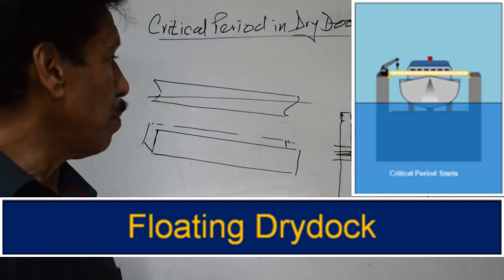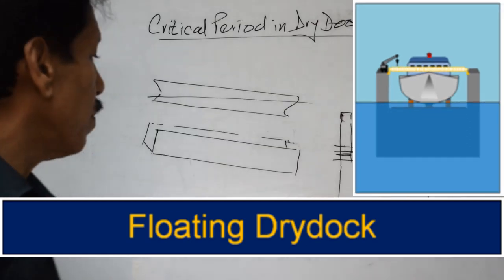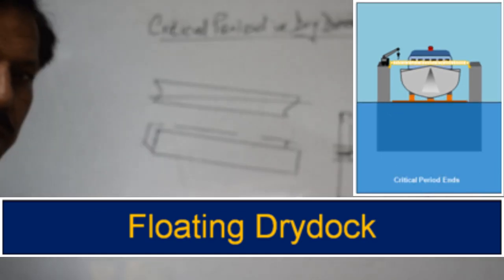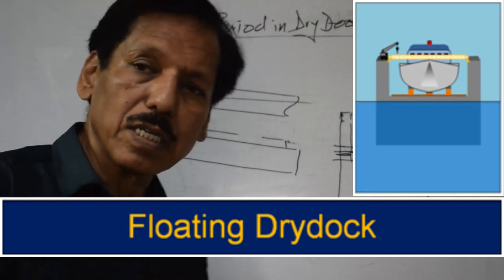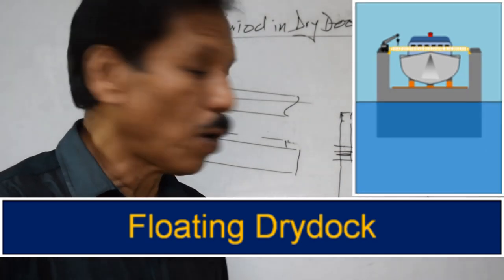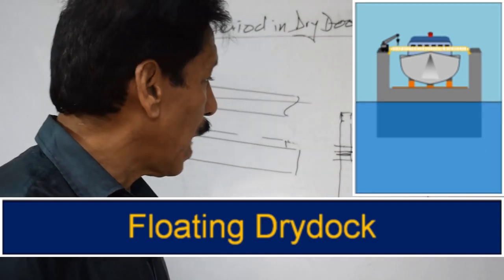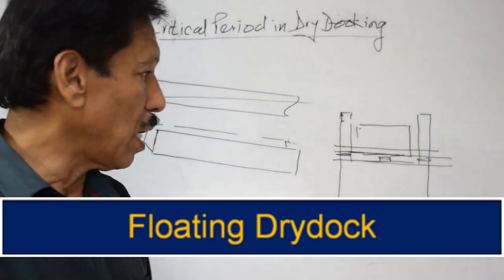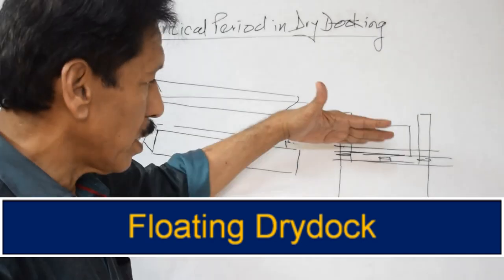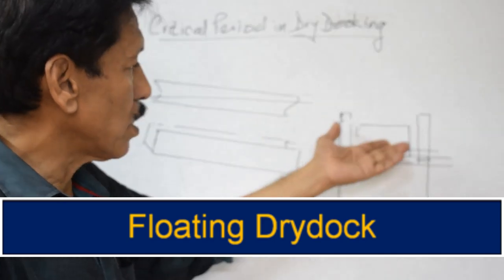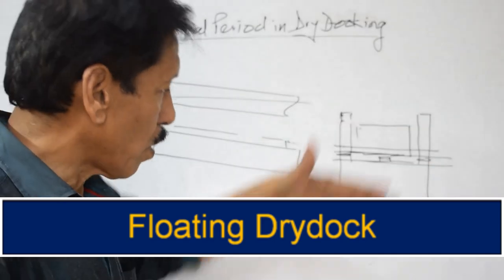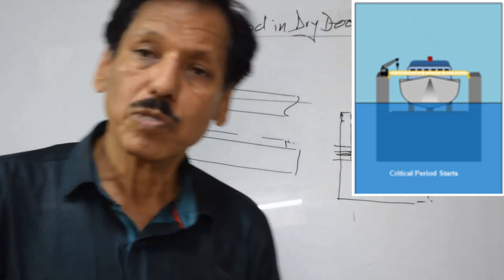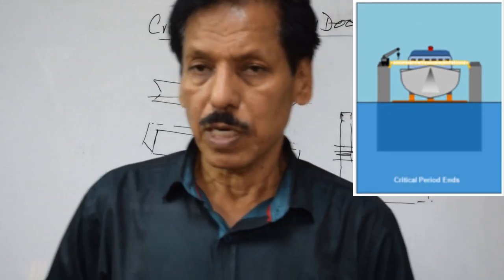So we can say: the critical period of the conventional dry dock starts after the stern touches first and lasts till the ship sits all over. The critical period of the floating dry dock is when the water level in the combination — meaning the ship plus dry dock — comes to the keel of the ship, until the water level comes to the tank top of the dry dock.